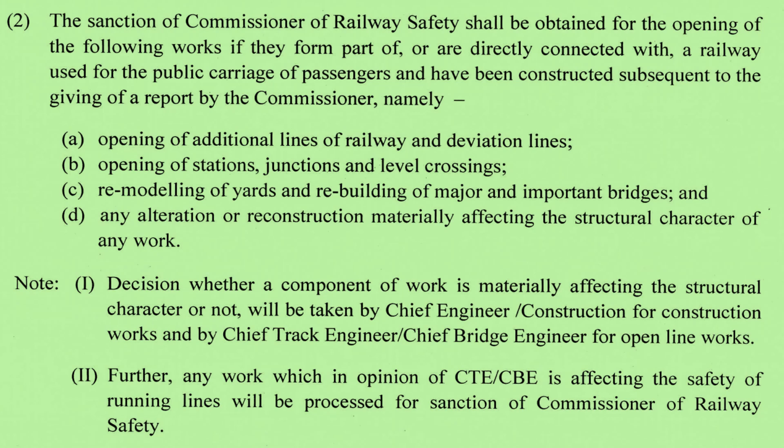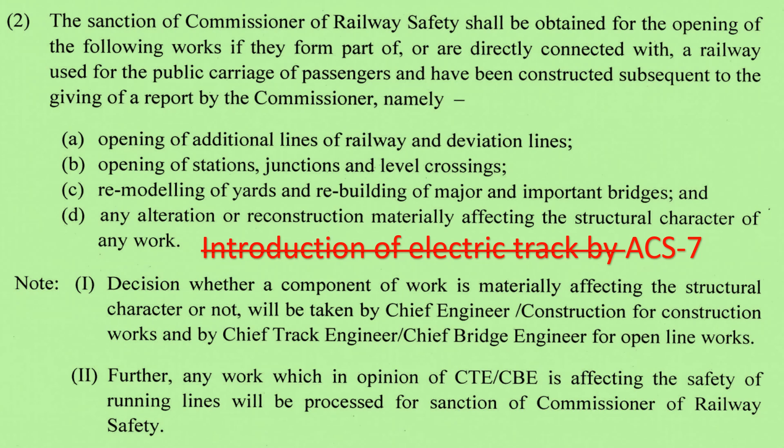Sub-para 2 of 1202: the sanction of Commissioner of Railway Safety shall be obtained for the opening of the following works, if they form part of or are directly connected with a railway used for the public carriage of passengers and have been constructed subsequent to the giving of a report to the Commissioner, namely: opening of additional line of railway and deviation line; opening of a station, junction and level crossing; remodeling of yards and rebuilding of major and important bridges; and any alteration or reconstruction materially affecting the structural character of any work. A new item — introduction of electric traction — which was added in ACS 6, is now removed by ACS 9.